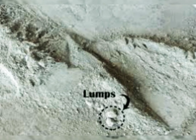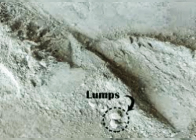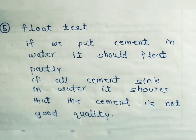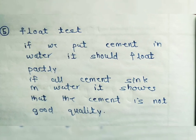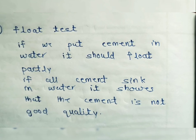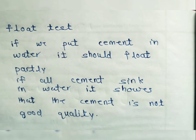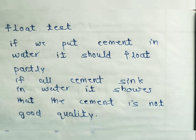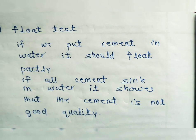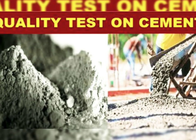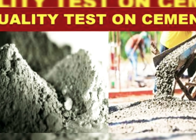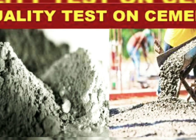The fifth test is the float test. If we put cement in water, it should float partly. If all the cement sinks in water, it shows the cement is not good quality. In this test, we pour the cement into water. If some cement sinks and some floats on the surface of the water, it shows the cement is good quality.